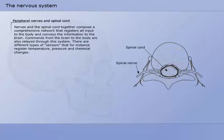Nerves and the spinal cord together compose a comprehensive network that registers all input to the body and conveys the information to the brain. Commands from the brain to the body are also relayed through this system.